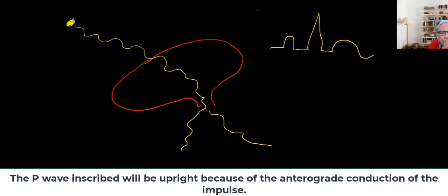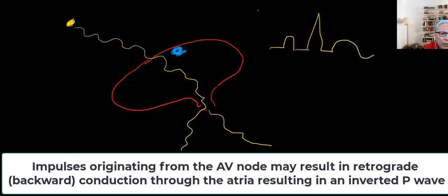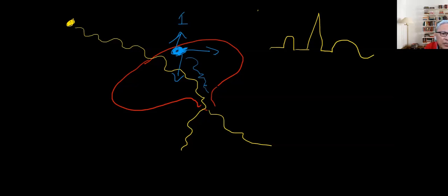If we have an impulse that originates from the AV node rather than the sinus node, it comes from here and generates an electrical spark. The spark goes this way, the spark goes that way, and this way. Which one is activated first, is it going to be the atrium or the ventricles?